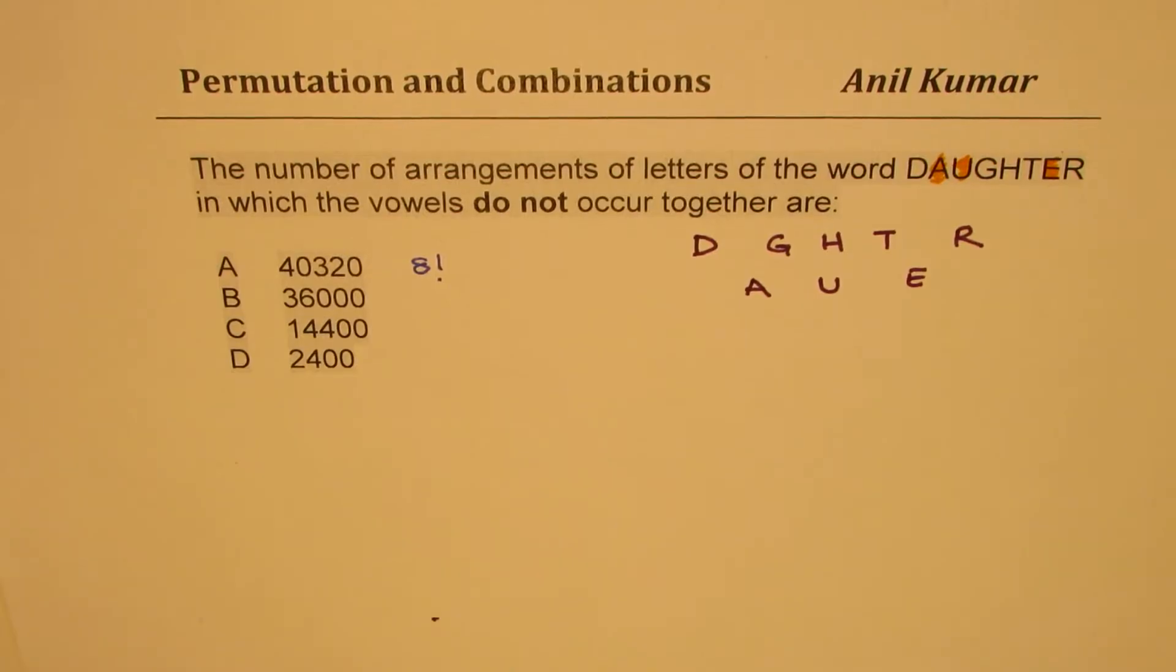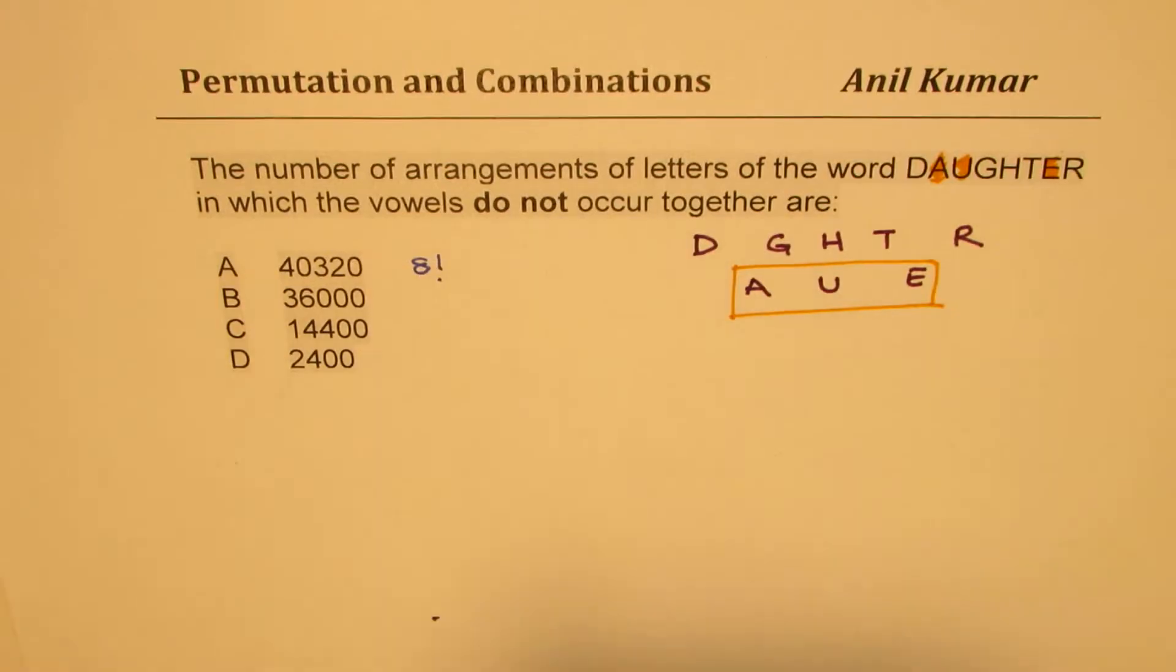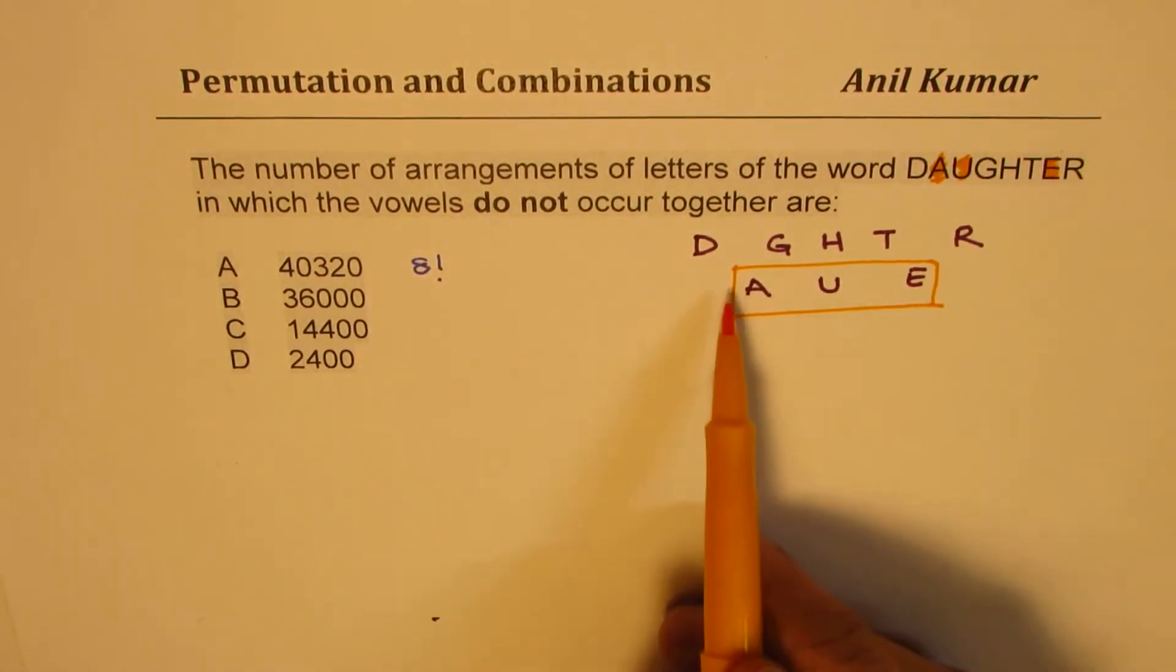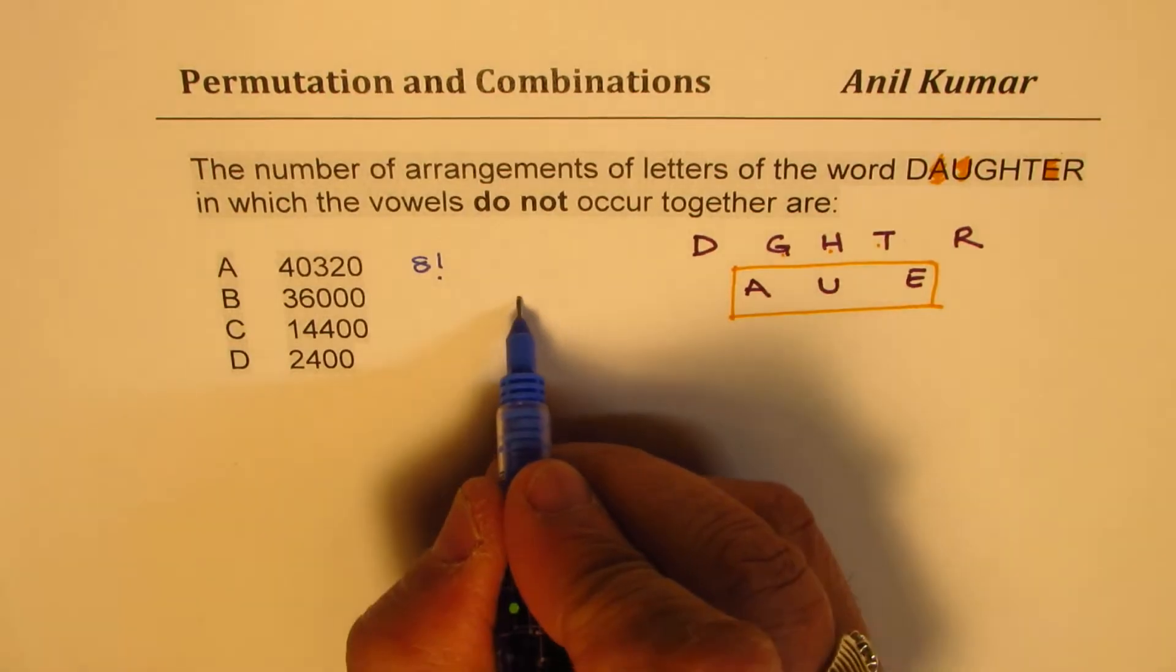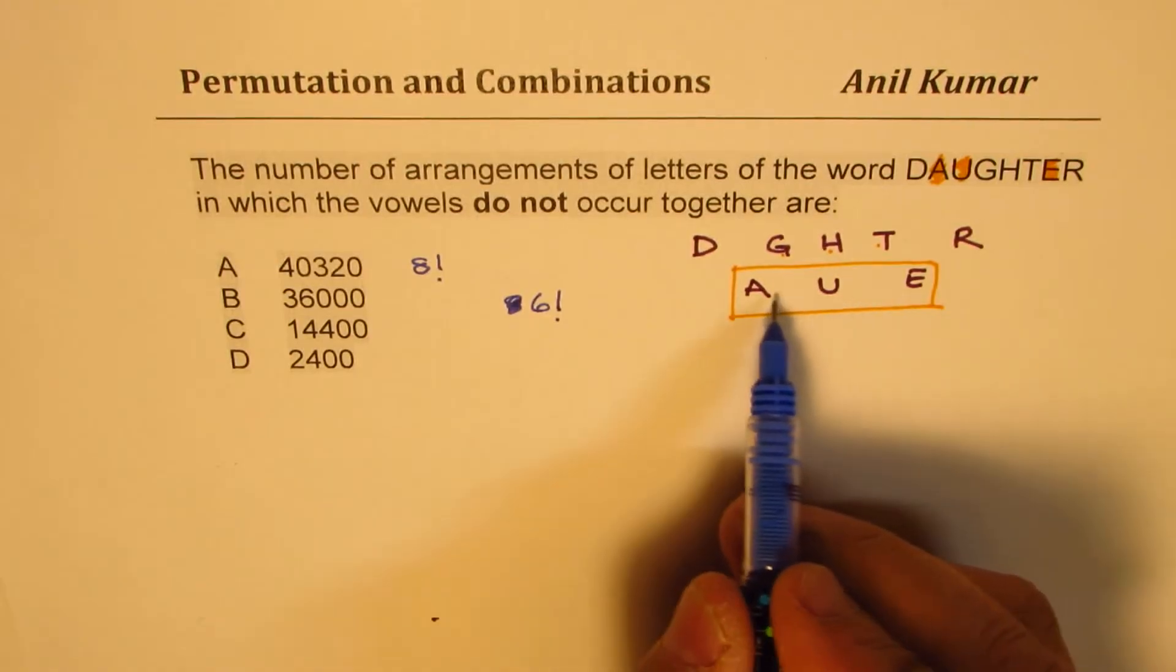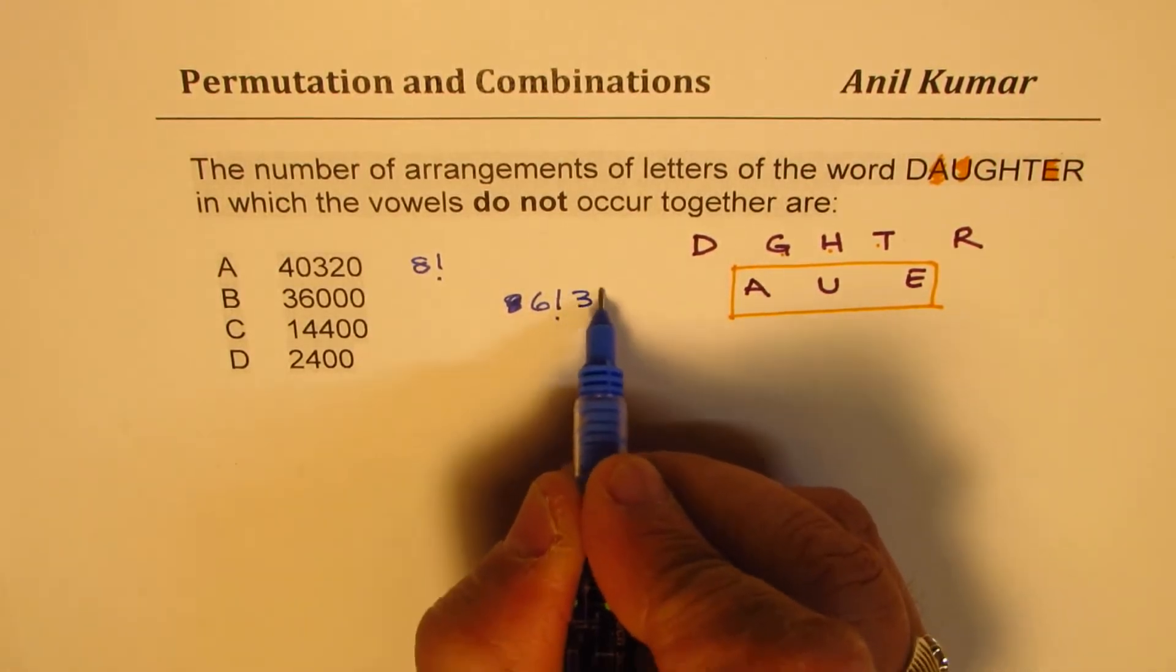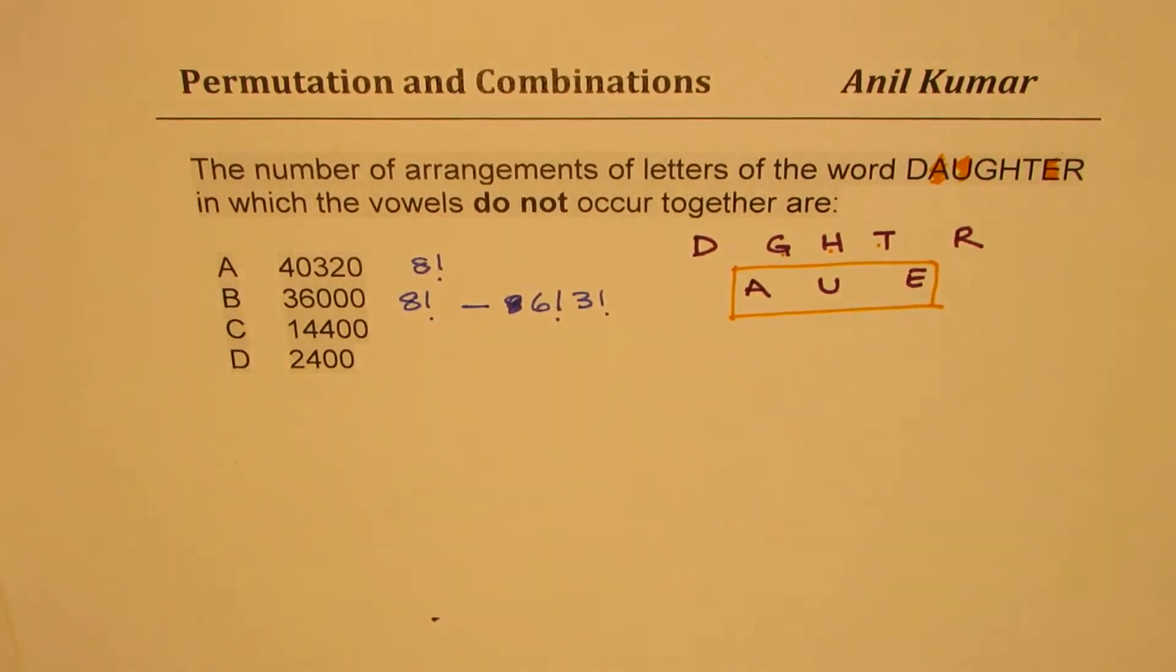Some of us combine these three vowels and then say, well, total is 8 factorial, but we should combine them all, find the total number of ways, and then subtract from 8 factorial. They say, well, now we have 6 positions, so 6 factorial times—these are three different letters—so times 3 factorial, and we can take away from 8 factorial to get our answer. So that will ensure that all three of them are not together.